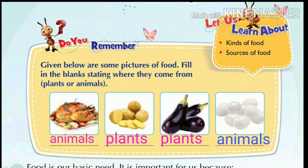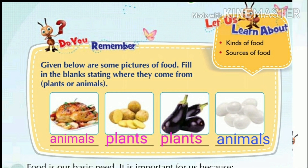Given below are some pictures of food. Fill in the blanks stating where they come from — plants or animals. The first picture is chicken. The next picture is potato. The next picture is eggs. The next picture is an animal source.